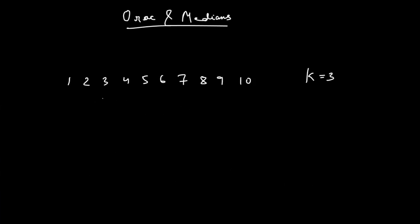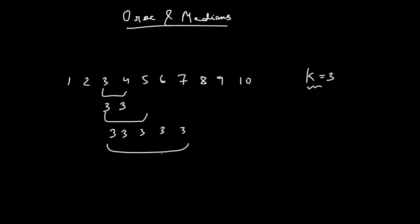At the end, the array should have all elements as three. For example, if I choose a range, it becomes three, three. Then choosing another range makes three, three, three. Expanding further, everyone eventually becomes three. So it is possible to make everyone as three.